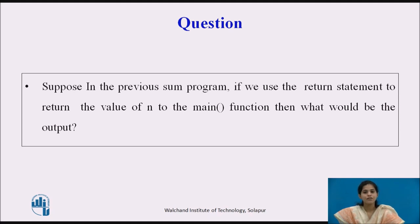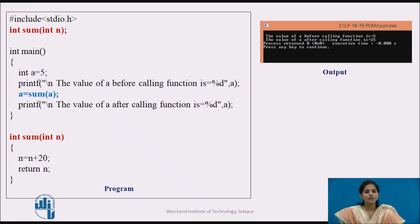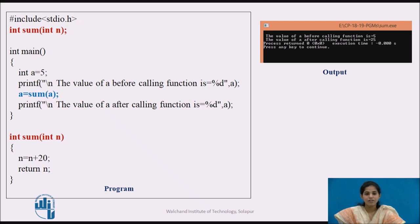Suppose in the previous sum program we use the return statement to return the value of n to the main function — what would be the output? If we use the return statement, then the return type must be changed to integer. In the main function, we create variable a, assign it a value, and the returned value from the function must be stored back in a. Control is transferred to the function body, the sum is calculated and stored in n, and the return statement returns that value to the calling function, which stores it in a and displays the output.